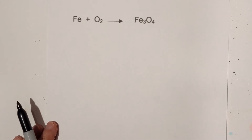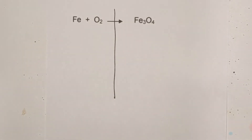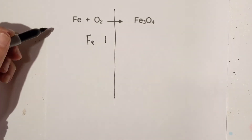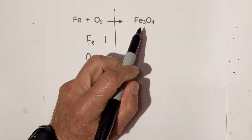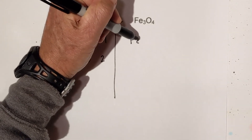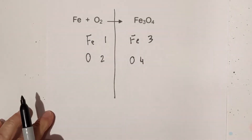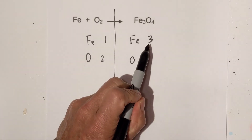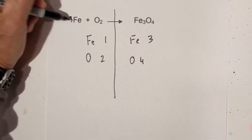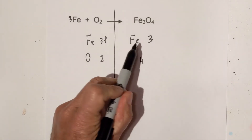Let's try another one. Draw a line down and let's count atoms. We have iron here, and it looks like we have one iron and two oxygens. On the other side, remember the three only applies to the iron, so we have three on this side and then we have four oxygens. Let's start with the metal — always start with the metal first. We have three on one side and one on the other, so I can add a three to multiply it. Three times one is three, so now the metals are balanced.